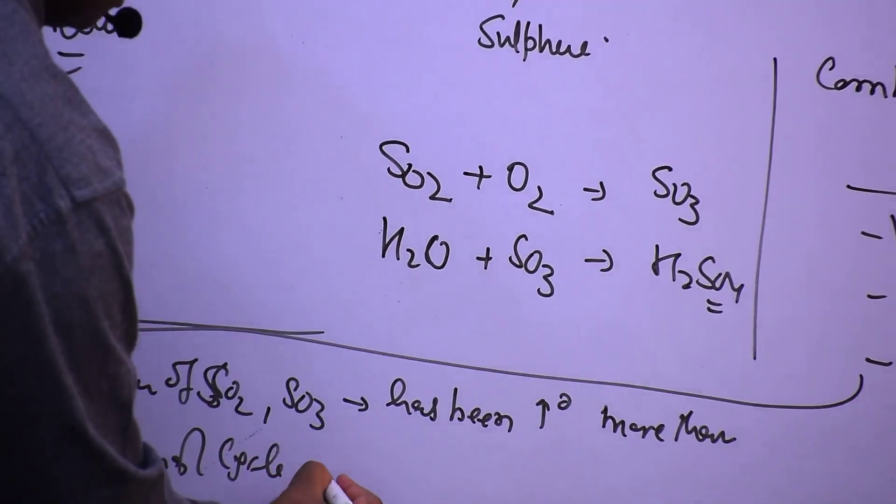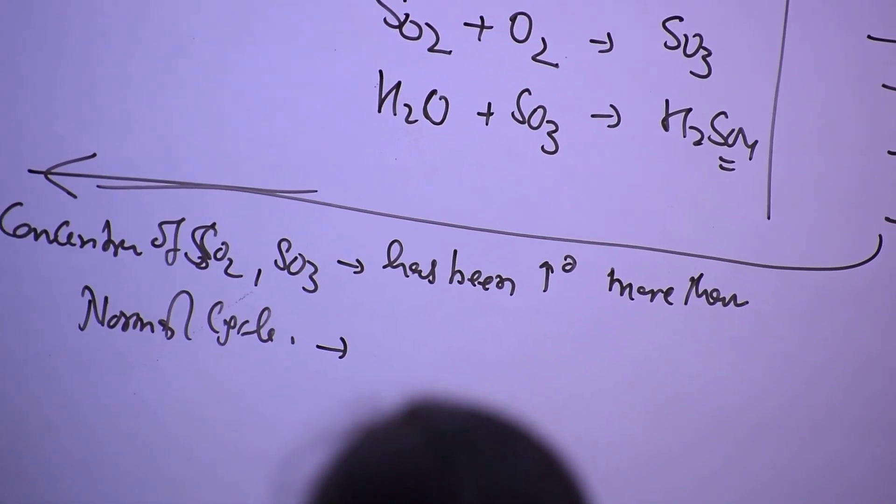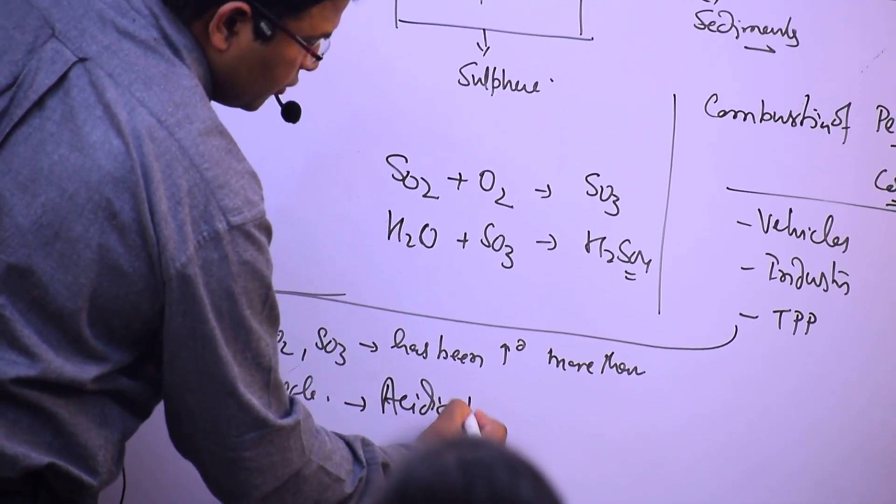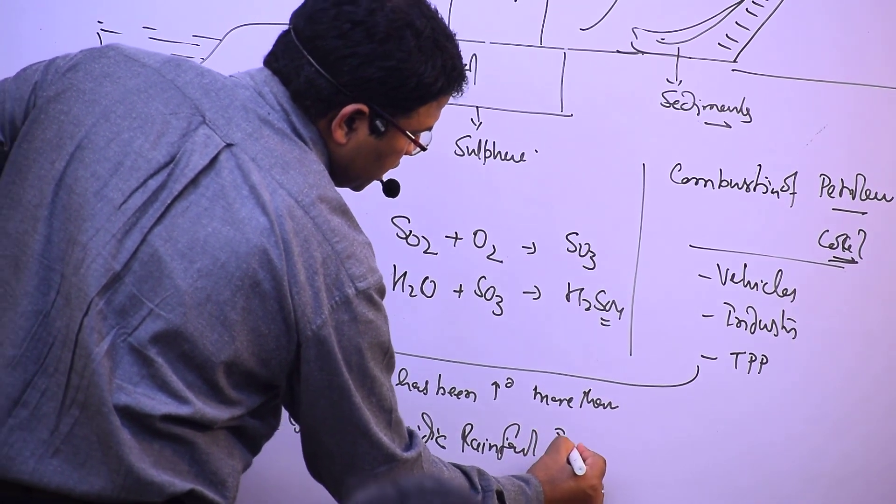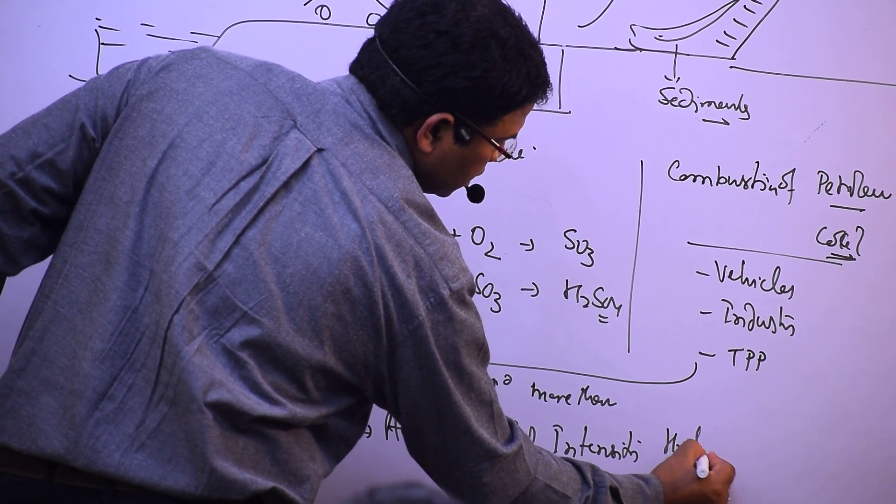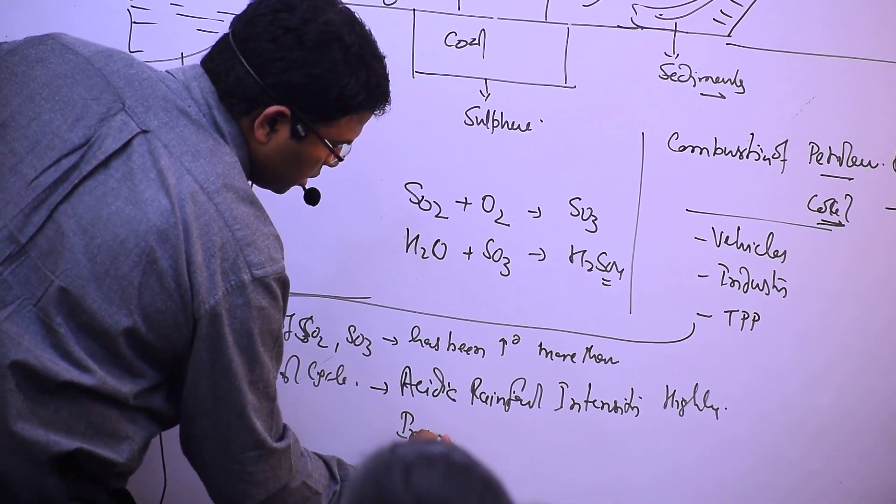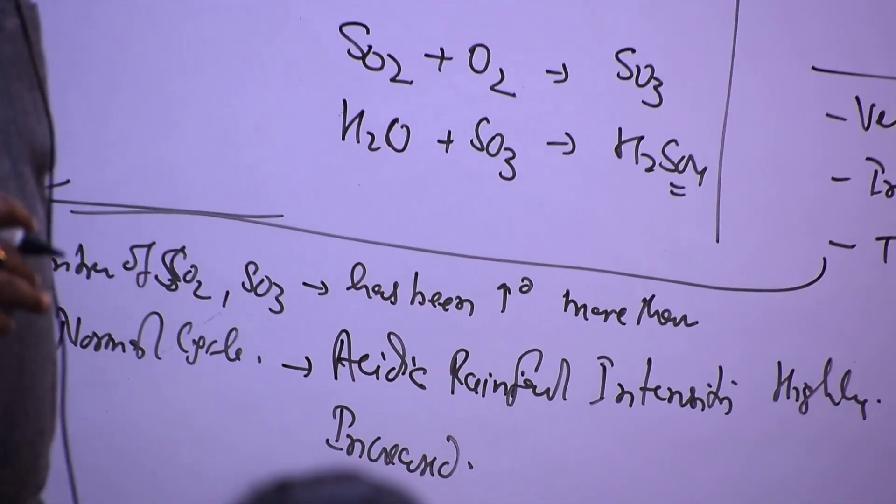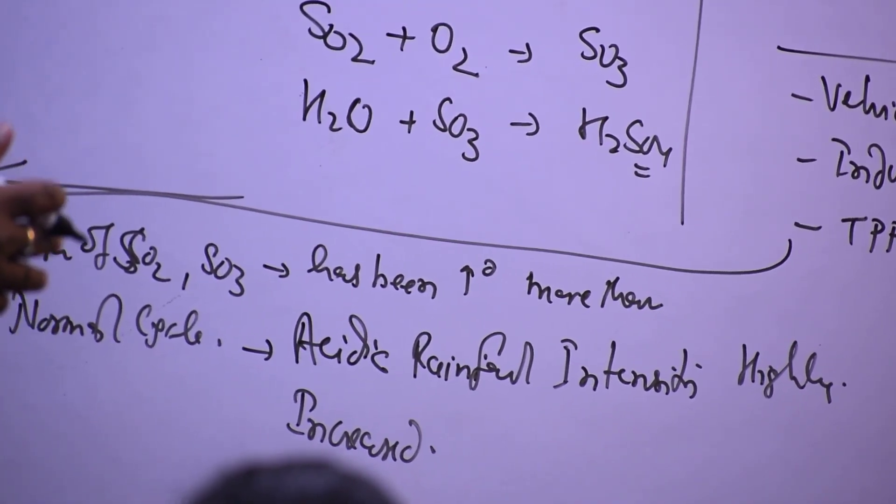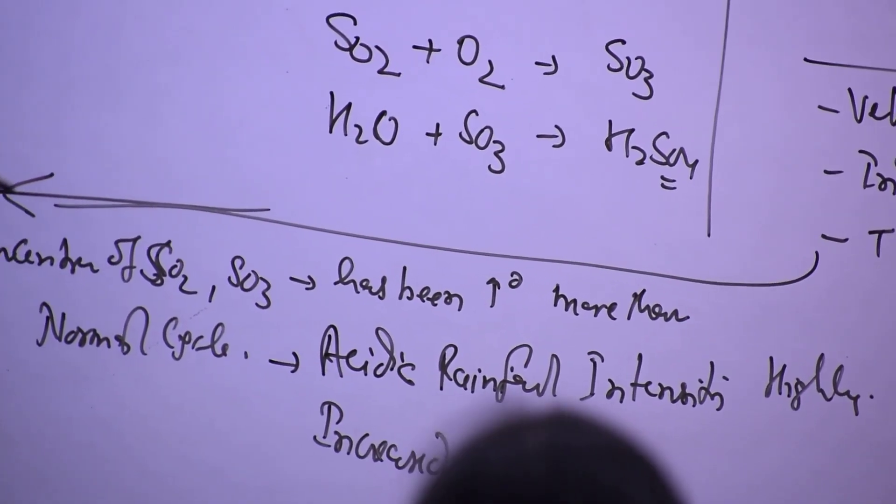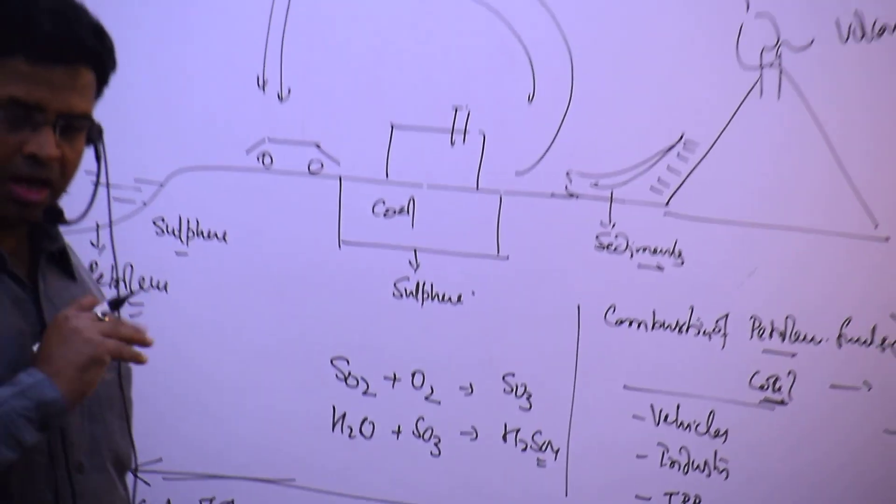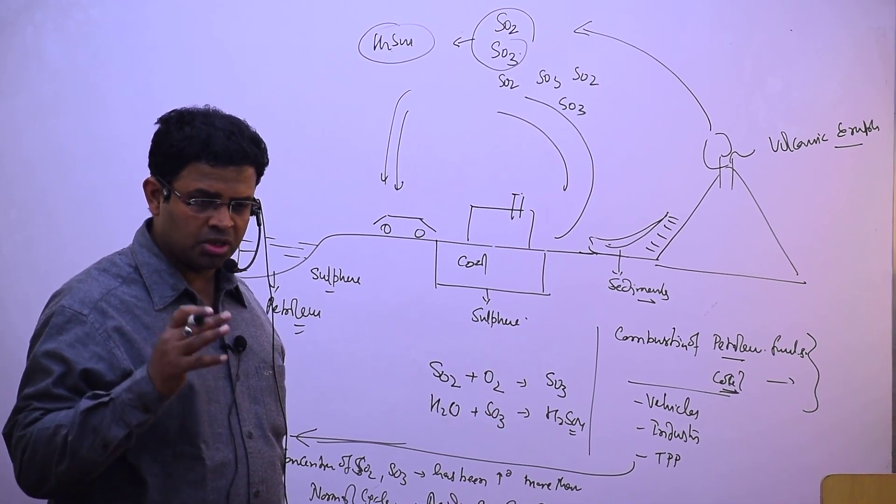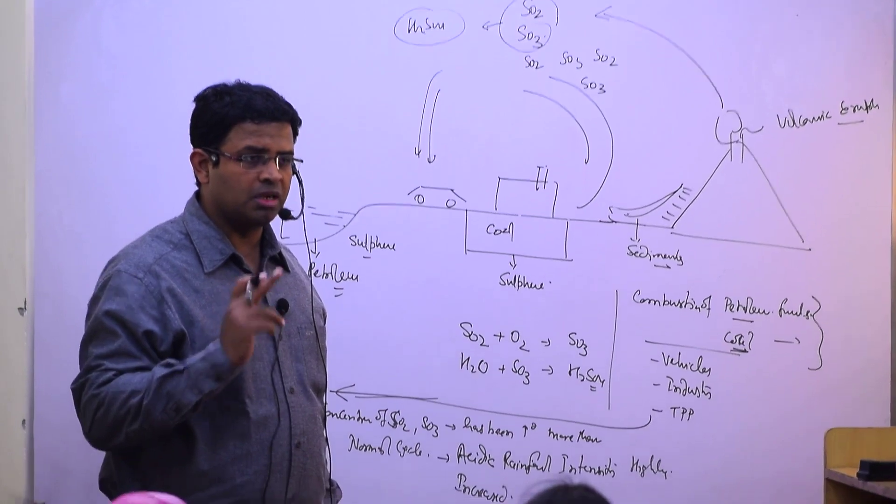So there will be more acidic rainfall. The intensity of acidic rainfall is highly increased. This rainfall is happening on soil and water. In soil, microorganisms are lost. In water, in the aquatic ecosystem, there is ecological imbalance.